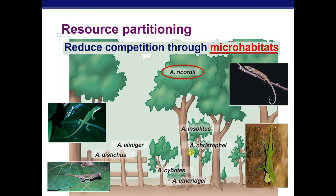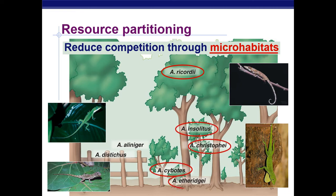We also talked about resource partitioning, which is another way to avoid competitive exclusion. For example, all of these lizards have a similar niche, but for the resource of shelter they utilize different portions. One lives high in the treetops, another lives in low trees, some live on the ground. They've partitioned or split up that resource — shelter — to limit competition and to save energy, because it takes energy to compete, and whenever an organism can limit the energy it's spending, that's a win for it.